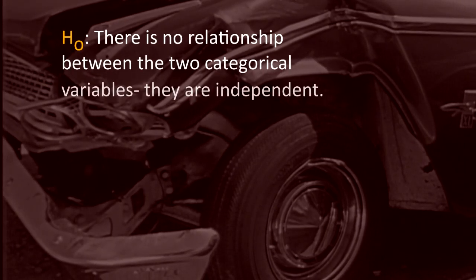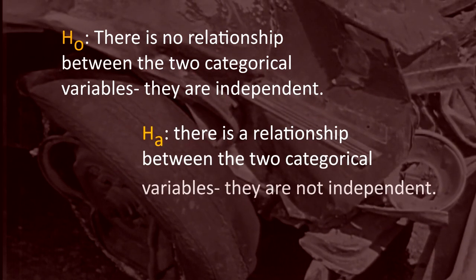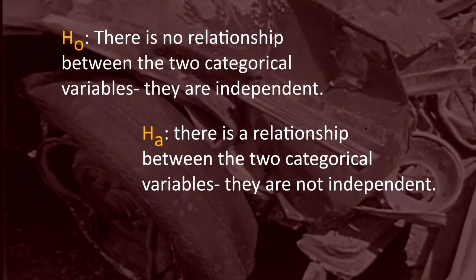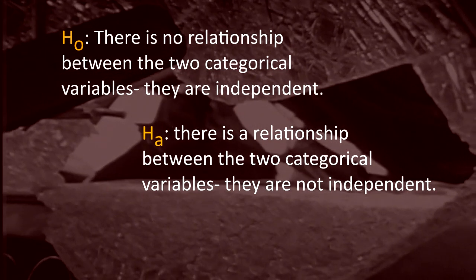Here are other ways that the null and alternate hypothesis can be stated for a chi-square test of independence. There is no relationship between the two categorical variables. They are independent. Or, there is a relationship between the two categorical variables. They are not independent.